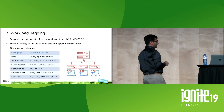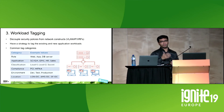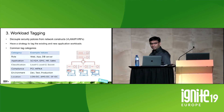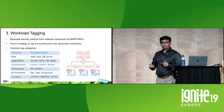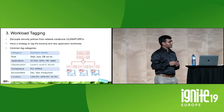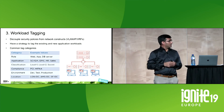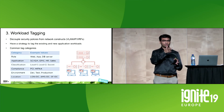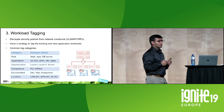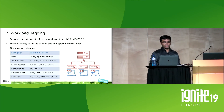Role could be web, app, or DB. Application could be SCADA, EPIC, HR, sales. Classification could be level one, level two, or secret. Compliance — if segmenting for compliance reasons, tag workloads as PCI or HIPAA. Environment covers dev, test, and production. Location identifies which data center the workload is in. Because of virtualization, workloads can move anywhere, so don't give overly fine location tags — just identify where that workload is located.